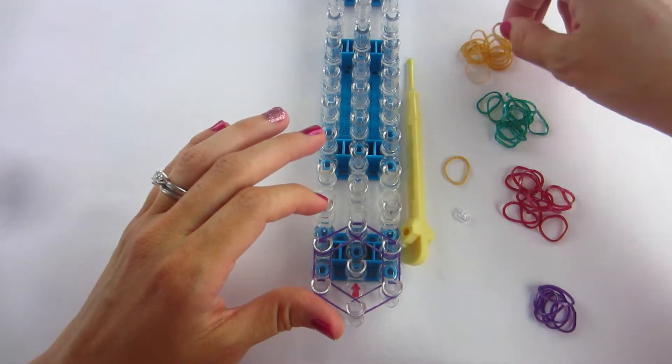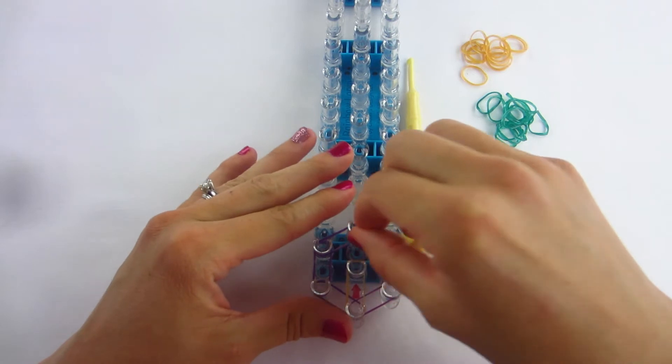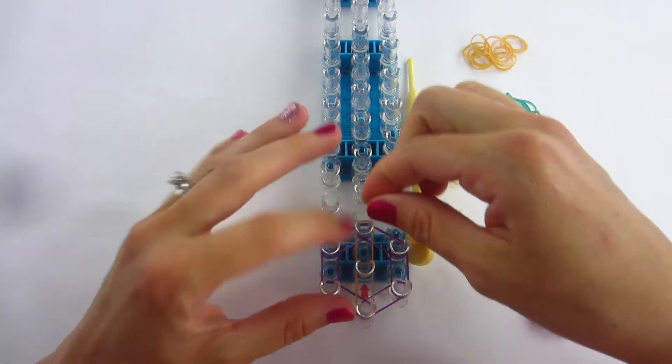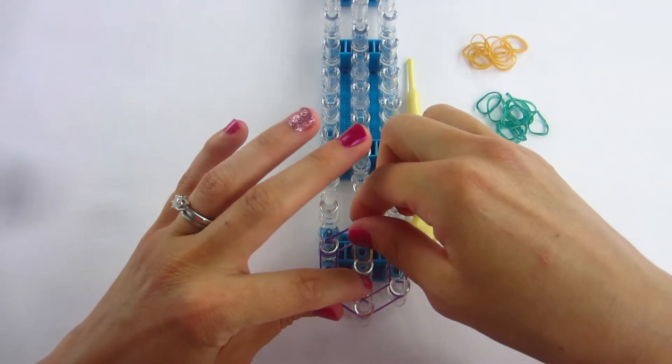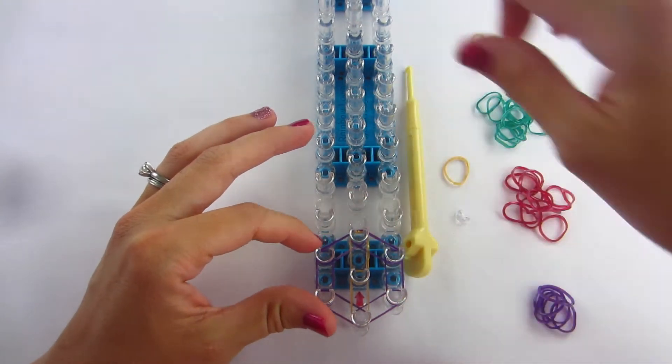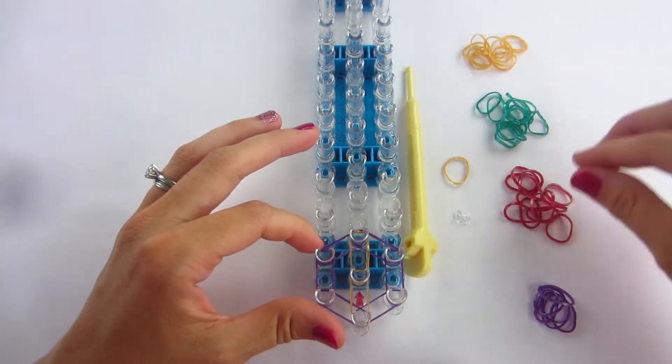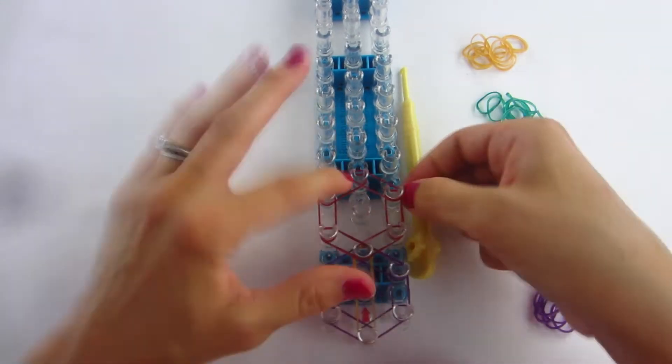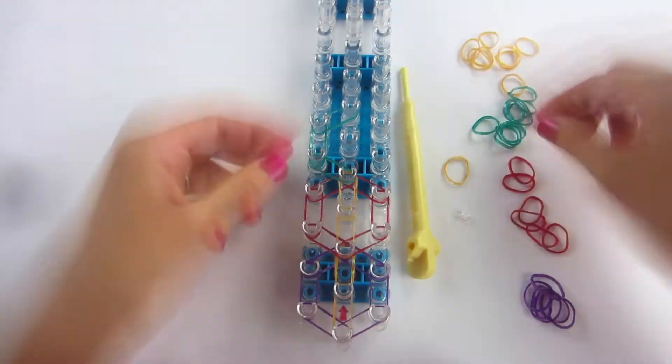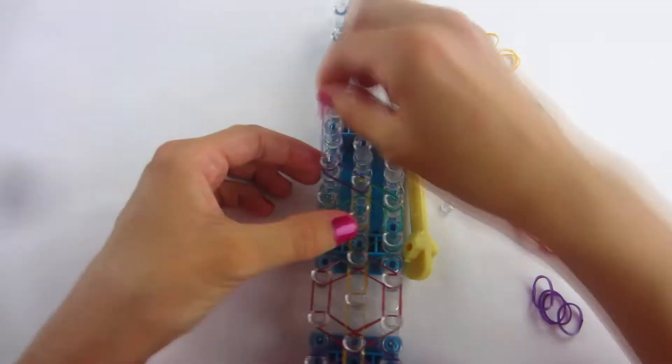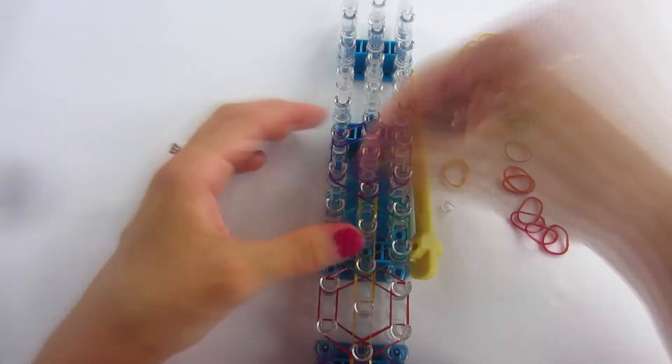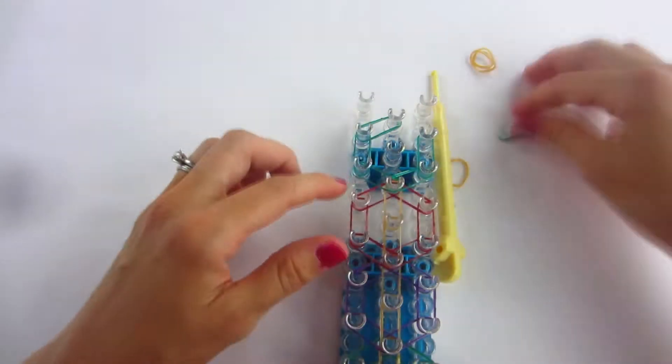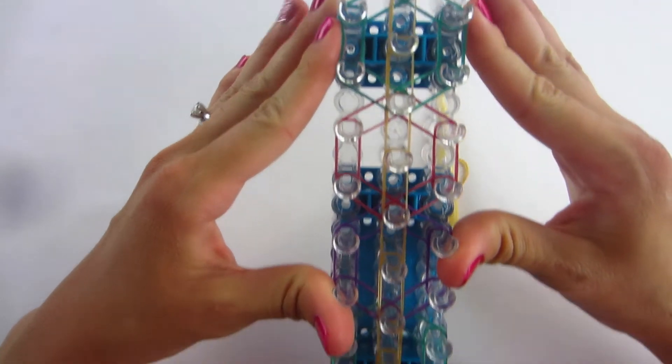Now I'm going to take two gold bands from that bottom middle peg into the middle, and then again from the middle to the top. And this is our basic design that we are going to be doing all the way up, and I'll be doing different colors. And this is what your loom looks like.